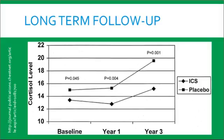Finally, with clinical trials we also frequently see long-term follow-up. In this figure we're seeing baseline, year one, and year three, and the differences between groups — the ICS group and the placebo group. One thing to point out is that at baseline there was a statistically significant difference between the two groups. This indicates that the investigators should be controlling for baseline when doing the analysis for year one and year three, because that baseline difference between groups can truly affect the outcomes at year one and year three.